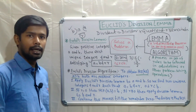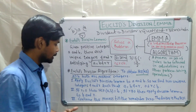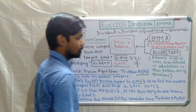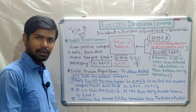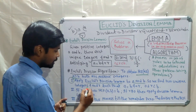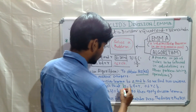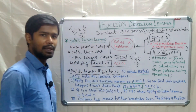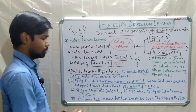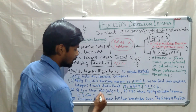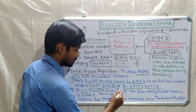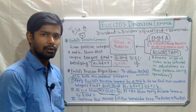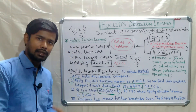Suppose a > b. Step 1: apply Euclid's division lemma to a and b to find integers q and r such that a = bq + r, where 0 ≤ r < b. If r = 0, then the HCF of a and b is the divisor b at this stage.